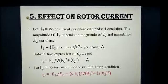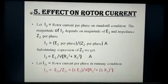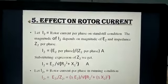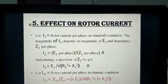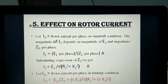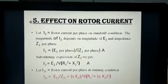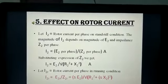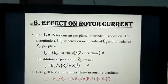Effect of slip on rotor current. The rotor current depends on the magnitude of the induced EMF and the impedance per phase. During the standstill condition, the rotor current is given by I2 = E2 / Z2. For the running condition, the rotor current I2R = E2R / Z2R. On making suitable replacements for the running condition parameters E2R and Z2R, we arrive at the final expression: I2R = SE2 / √(R2² + (SX2)²). These are the rotor parameters on which the effect of slip is influenced.